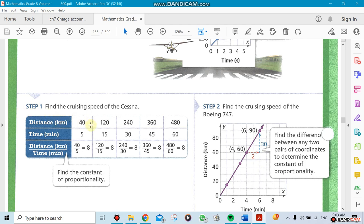Distance here is 40 kilometers when time is five minutes, for example. Now if I do a division: distance divided by time. If I say 40 divided by 5, I get 8. What does the 8 represent?